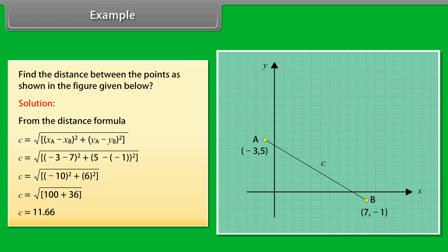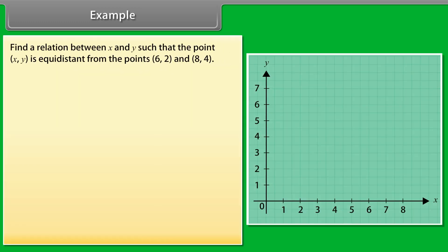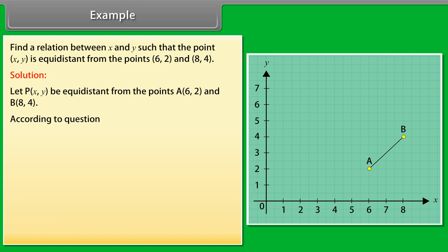Find a relation between X and Y such that the point (X, Y) is equidistant from the points (6, 2) and (8, 4). Solution: Let P(X, Y) be equidistant from the points A(6, 2) and B(8, 4). According to question, AP is equal to BP, so AP square is equal to BP square.